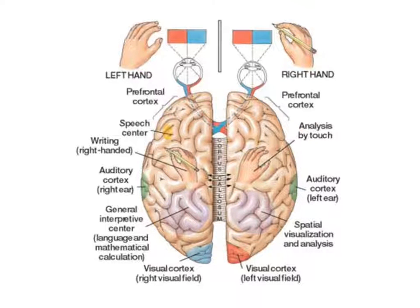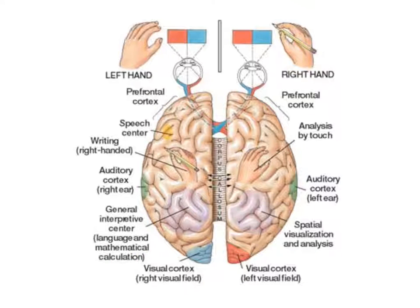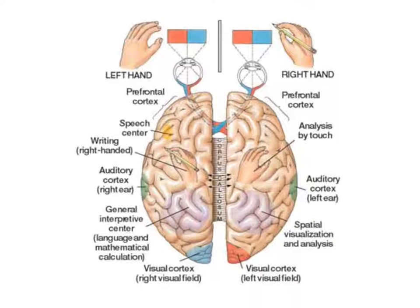Your general interpretive center is in the left hemisphere. This center helps you understand language and mathematical calculation. And your spatial visualization and analysis area is in your right hemisphere. This helps you imagine things and analyze things.